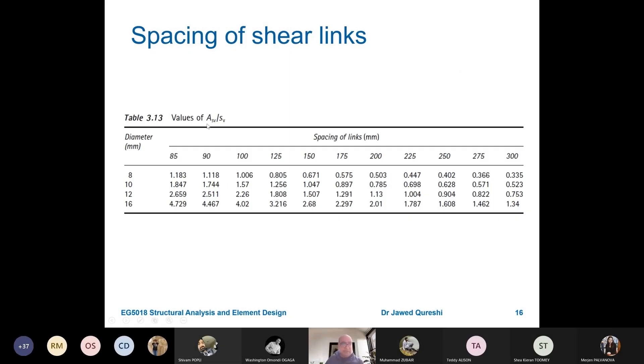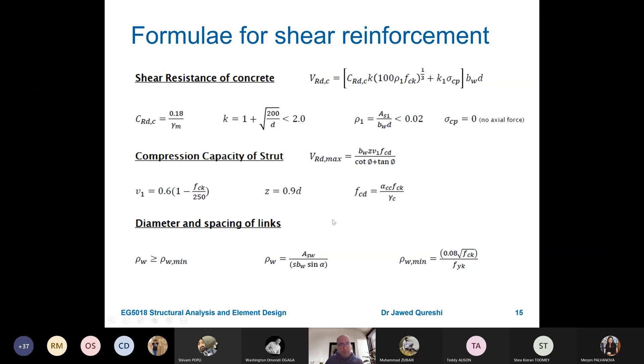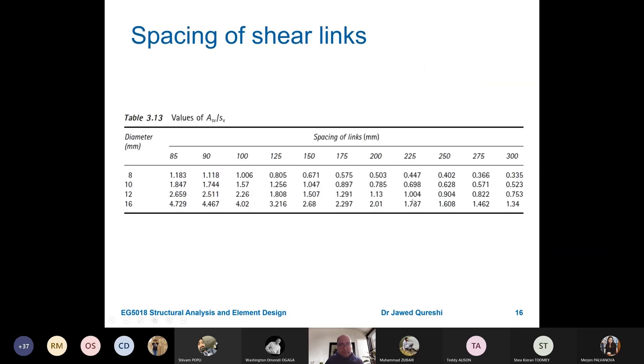And then, this is very useful. This is shear area divided by spacing. For different diameters, you have been given spacing of links and we will be working out this AS over S for various parameters. It is similar to main reinforcement. Now, first thing first, to solve this problem, we are going to use these formulas and we are going to use this table. So, the first step is design shear force.